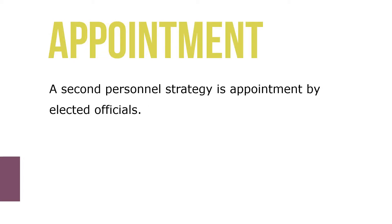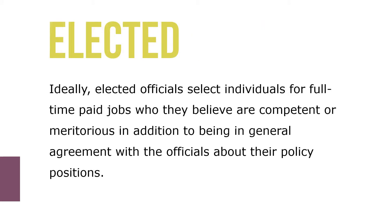A second personnel strategy is appointment by elected officials. Generally, appointed officials serve at the will of those who select them. The most salient appointed officials are those who run agencies as cabinet-level secretaries, directors, and commissioners, and their chief deputies. Ideally, elected officials select individuals for full-time paid jobs who they believe are competent in addition to being in general agreement with the officials about their policy positions.